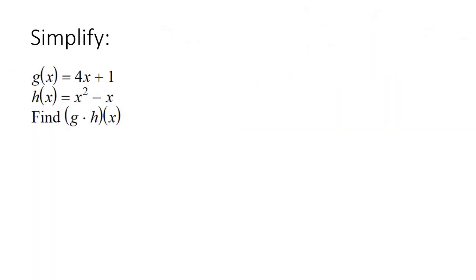Here's our next example. They give us two functions, g and h, and they just want us to multiply them. So we can say g·h(x) equals 4x + 1 multiplied with x² - x, and so we use FOIL once again. First times first gives us 4x³.